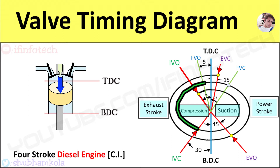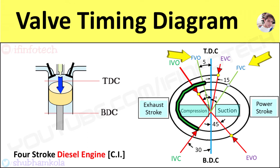Now the compression stroke starts. The fresh air contained in the cylinder is compressed, so pressure and temperature increase. Fuel is injected by the fuel injector over the fresh air at an angle of 5 degrees before TDC position of the piston, and fuel injection closes at an angle of 25 degrees after TDC position of the piston.